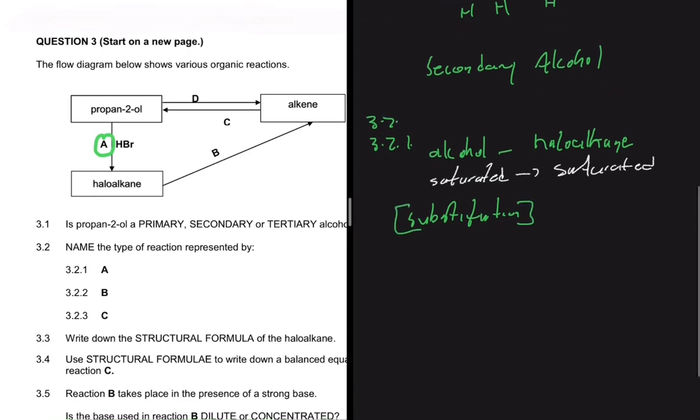And then now 3.2.2. Let's go ahead and look at reaction B. So for reaction B, we're going from a haloalkane to an alkene. So we're going from a saturated compound to an unsaturated because we have a double bond on an alkene. So every time when we go from an organic compound that is saturated to an organic compound that is unsaturated, we have an elimination reaction. So 3.2.2, we have elimination.